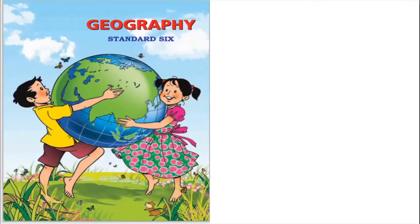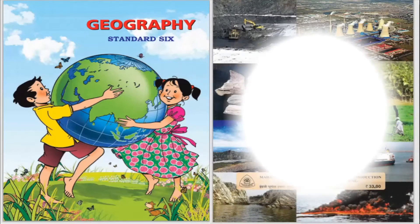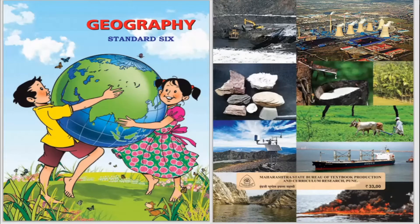Now let us look at what we will learn in geography. In geography you will be learning about the earth. Can you see two beautiful children here? They are holding up the earth — that means they will learn more about the earth in geography this year. You will have lessons about the oceans, about the rocks, about the occupation of people, and lessons based on natural resources — what we get from nature and how we are supposed to make use of these resources. All these things we will be learning in social studies this year.